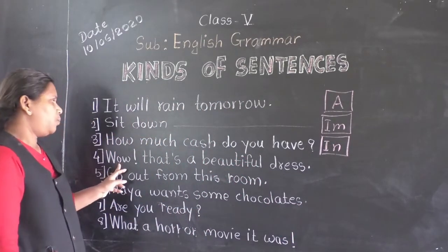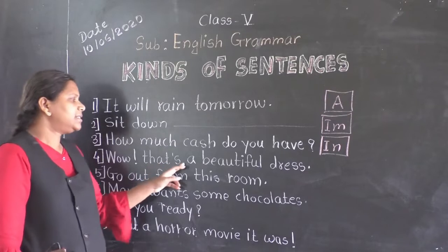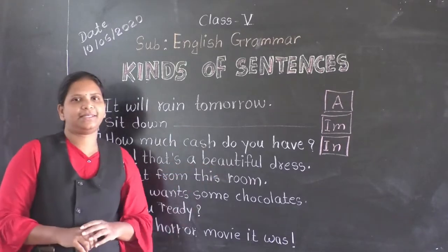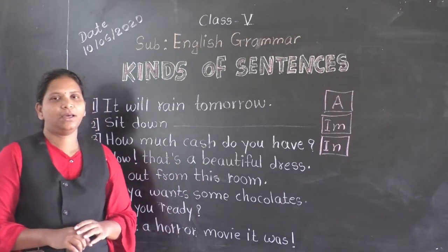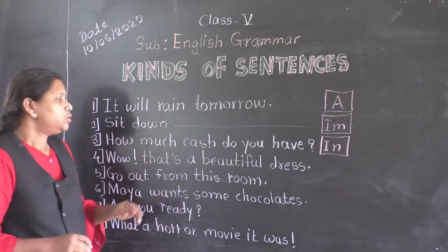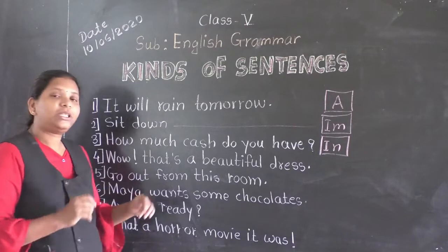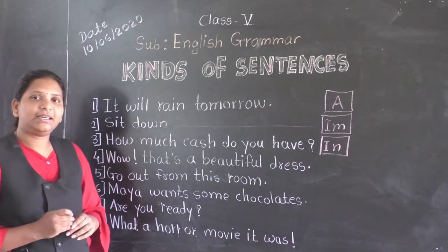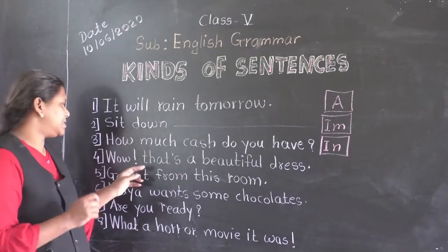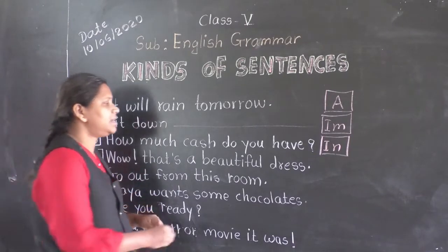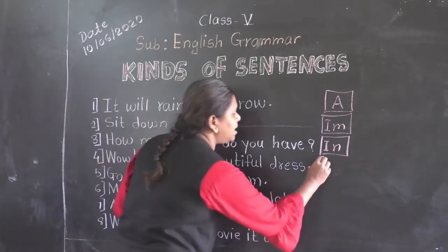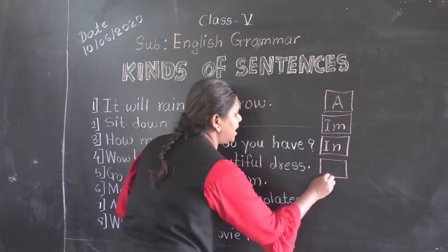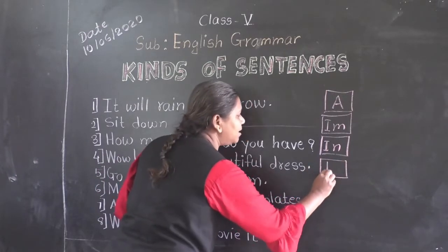Wow! That's a beautiful dress. Okay? So what do you think? Which kind of sentence is it? Yes, it is an exclamatory sentence, so we will write here E.